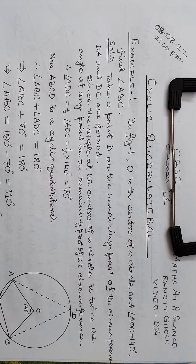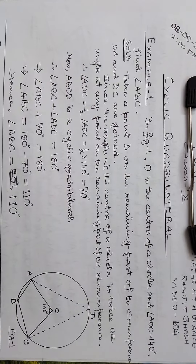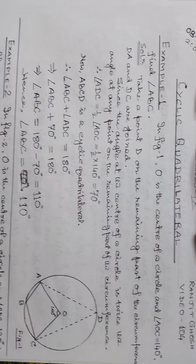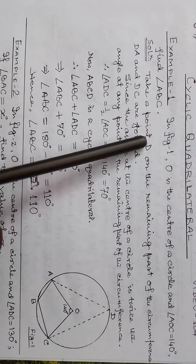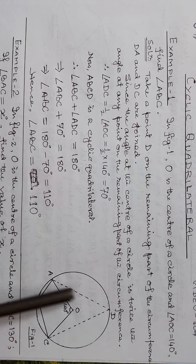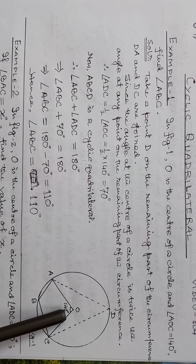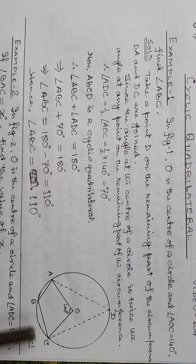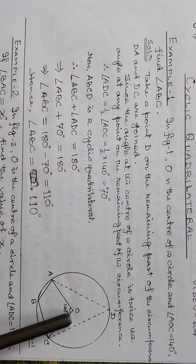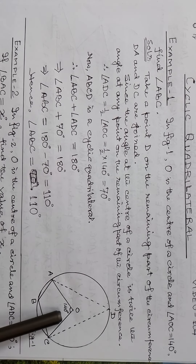This is Example 1. In figure 1, O is the center of a circle. The angle AOC is 140 degrees.